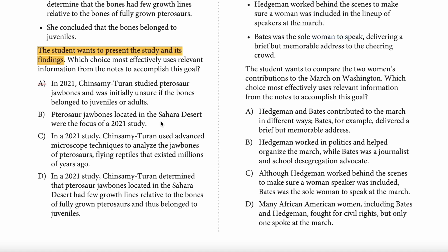Try answer choice B: 'A store of jaw bones located in the Sahara Desert was the focus of a 2021 study.' Does answer choice B present the study and its findings? No — it tells you the topic of the study, that's it. It doesn't present the study or the findings. And it's tricky, because answer choices A and B are definitely going to be referenced in the notes — that's information in the notes — which is why I recommend just avoiding them. You're going to be tempted to go back to the notes and think, 'Oh, it mentions that,' but does it answer the question? No.